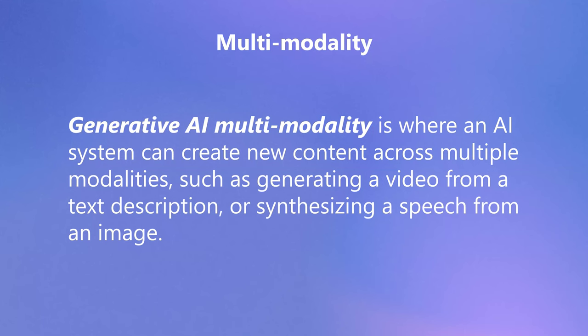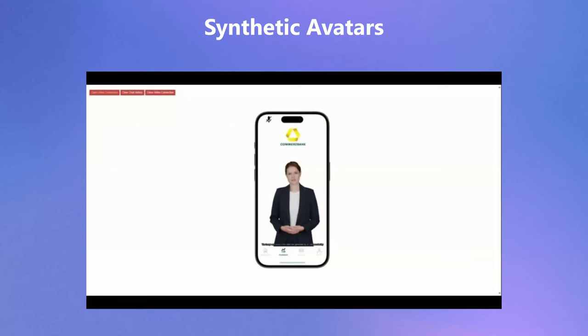Multimodality means the old models only worked with text in, text out. Now you can use image and sound as input — send it a picture and ask a question about it. Think of Shazam identifying songs — that was early AI, since replaced with generative models. And now multimodal output is here too: I can create pictures, videos, music, copy sounds, copy speech. That's multimodal. I'm going to try to play a quick video to demonstrate.